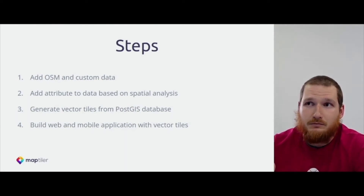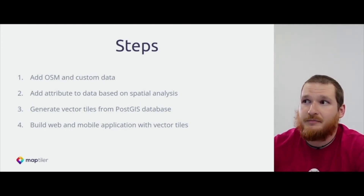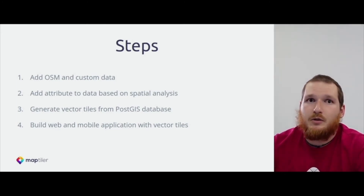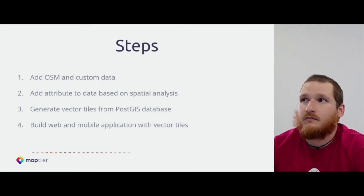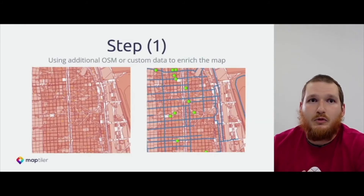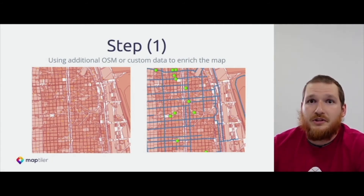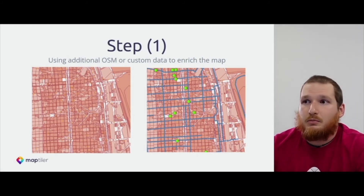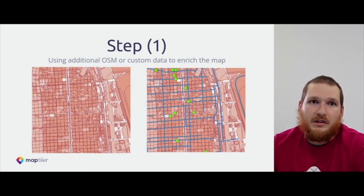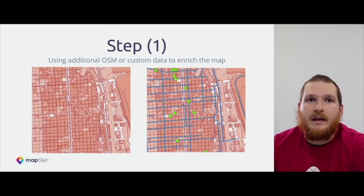These are the steps we will show you in the workshop. First, we need to add data — OpenStreetMap and our custom data from the Buenos Aires open data portal. Second, we want to modify our data and perform the analysis. Third, we will take these data and generate vector tiles from them. And last, we will build a web app. For Step 1, we will use OpenStreetMap data for the base map, but you may find that OSM data are incomplete — for example, missing cycleways or bike shops. We will show you how to add these data into the vector tiles schema.